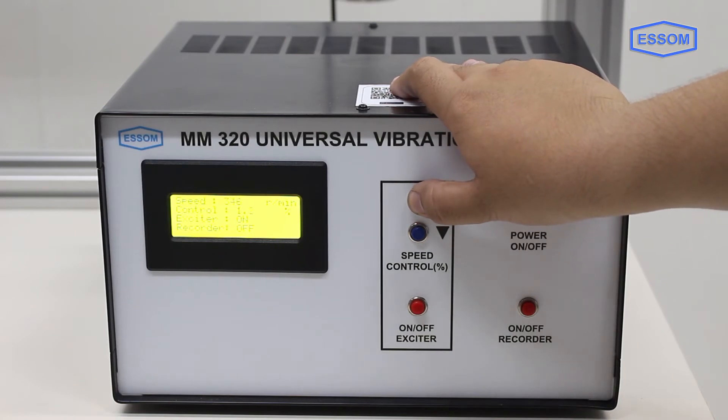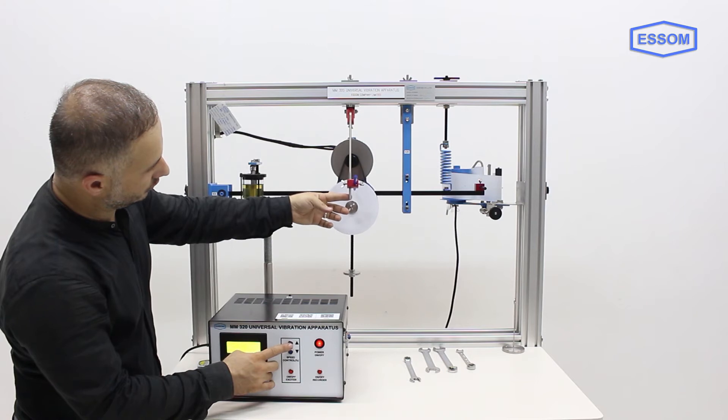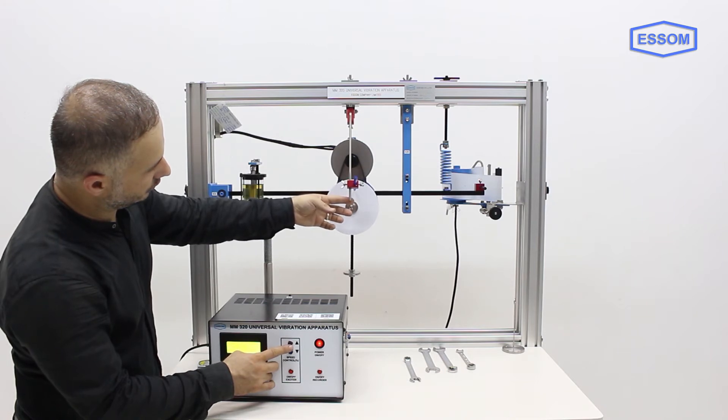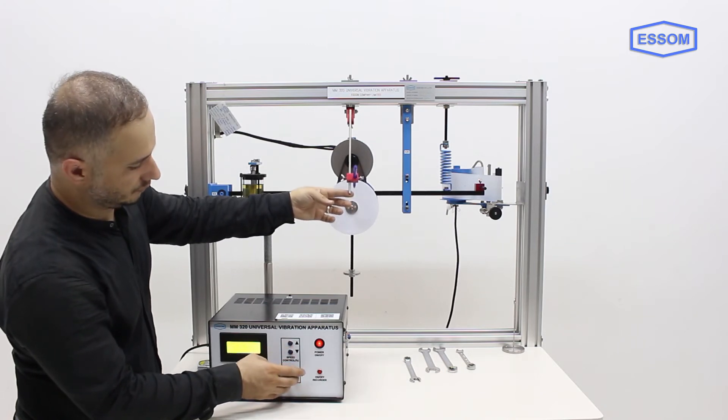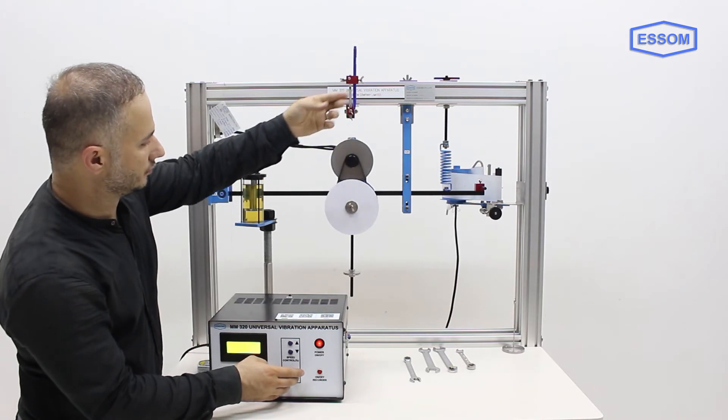Two unbalanced rotors are attached to the exciter motor, and a synchronous belt connects the exciter motor to the unbalanced rotors, thus providing a forced vibration when the motor runs. Weights can be attached to the rotors.